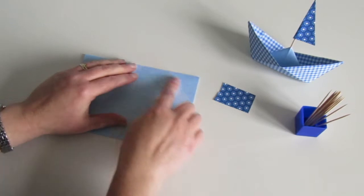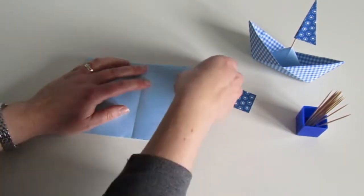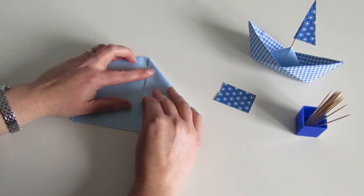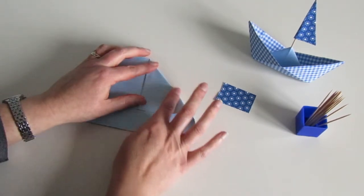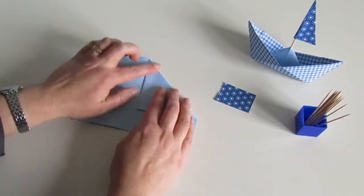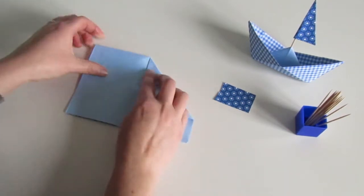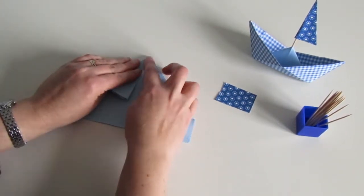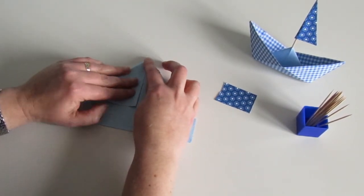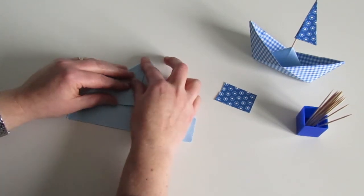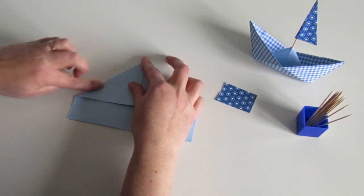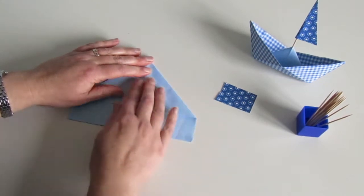The next job is, you can see the center line, we're going to just fold both top corners into the center line. So that's one, smooth it really carefully. I find it really quite satisfying to smooth these lines when I'm doing this kind of activity.